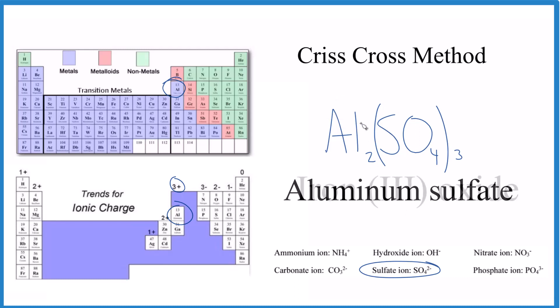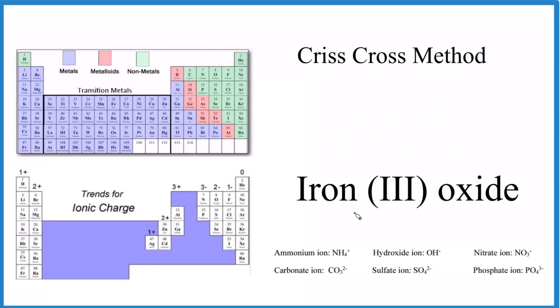Let's do another. Iron 3 oxide. And the 3 is because this is a transition metal. That means it has a 3 plus ionic charge. So write the formula for iron 3 oxide.